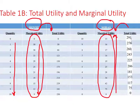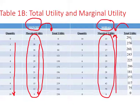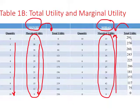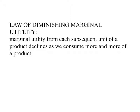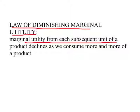Diminishing marginal utility states: as you consume more and more of a product, marginal utility declines. This makes intuitive sense. The first car I bought gave me a lot of satisfaction; the second car gave less; the third car gave even less. We believe this is true for every individual — the more you consume, marginal utility continuously declines, though total utility keeps increasing. This is called the law of diminishing marginal utility.